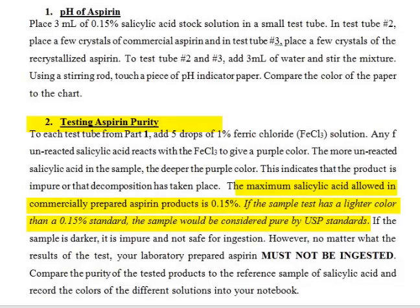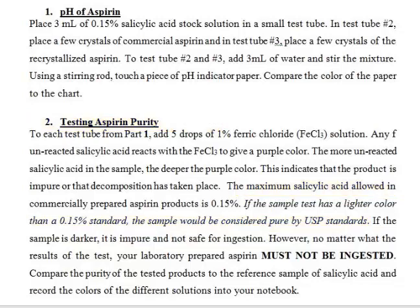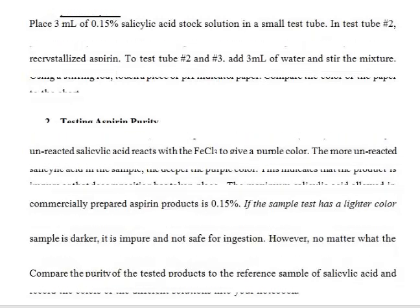The maximum amount of salicylic acid allowed in commercially available aspirin is 0.15%. If we compare our aspirin to commercial aspirin and our aspirin is darker in color, that indicates more leftover salicylic acid in our sample than in the commercial product, meaning our aspirin does not meet the necessary quality requirements.